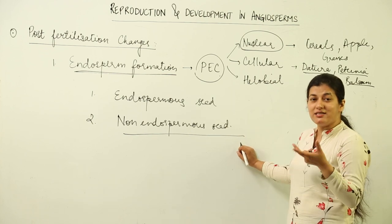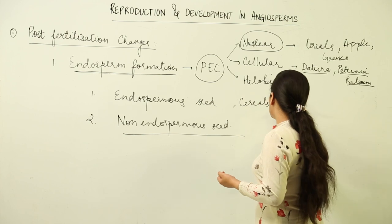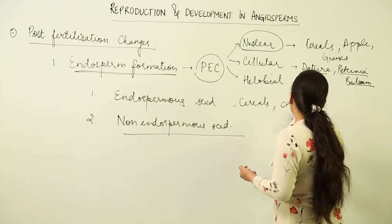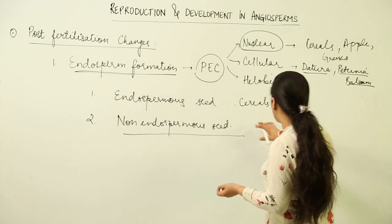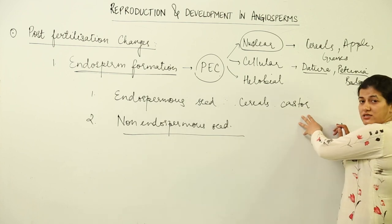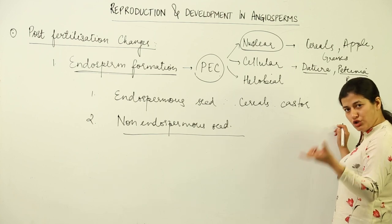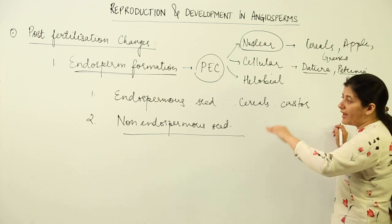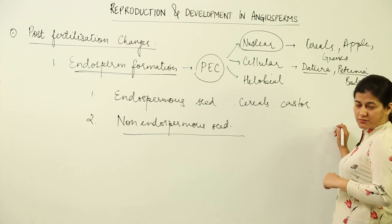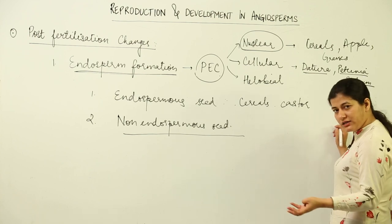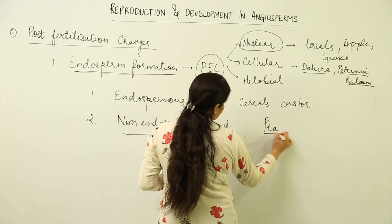In certain cases — such as cereals, castor seeds, and coconut — the endosperm is not completely consumed by the growing embryo and remains within the seed. Such a seed is known as an endospermous seed. In contrast, when the endosperm is completely consumed by the embryo, the seed is non-endospermous — pea is a classic example.